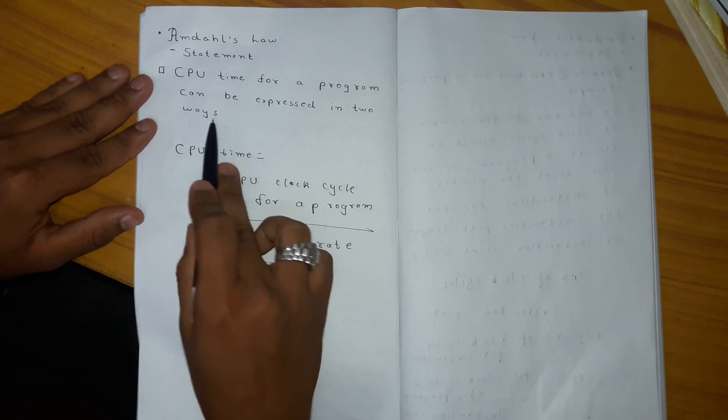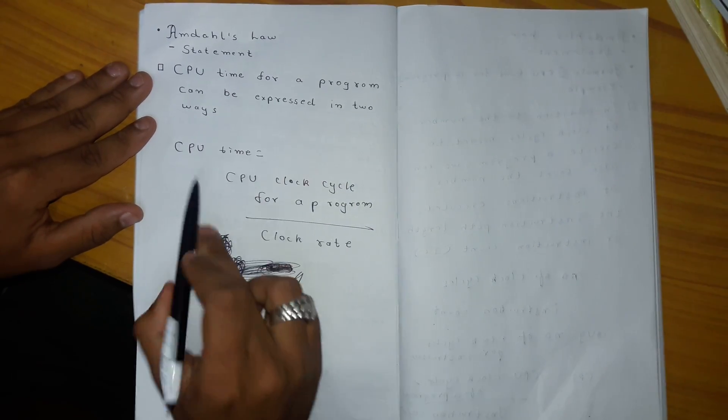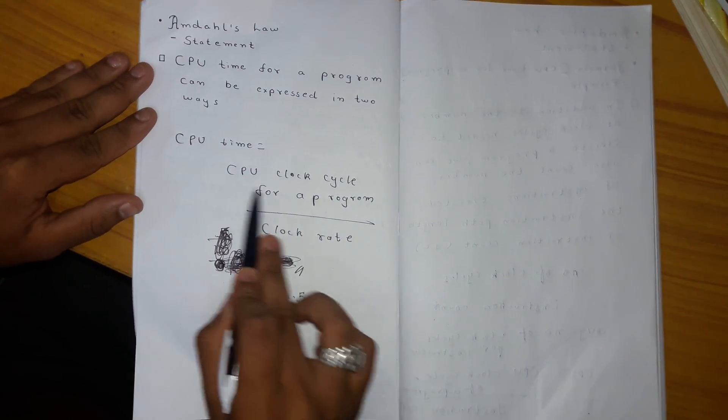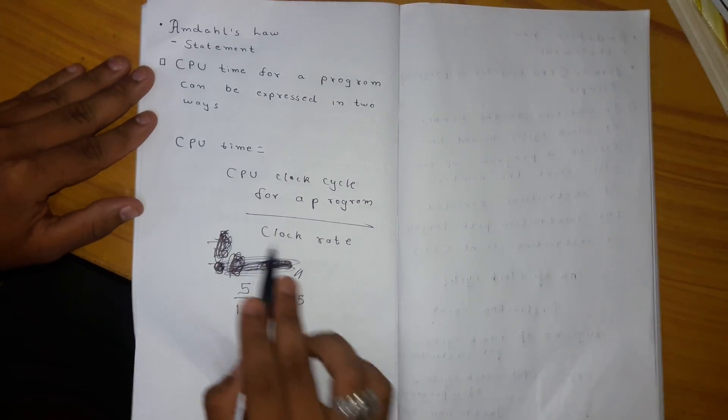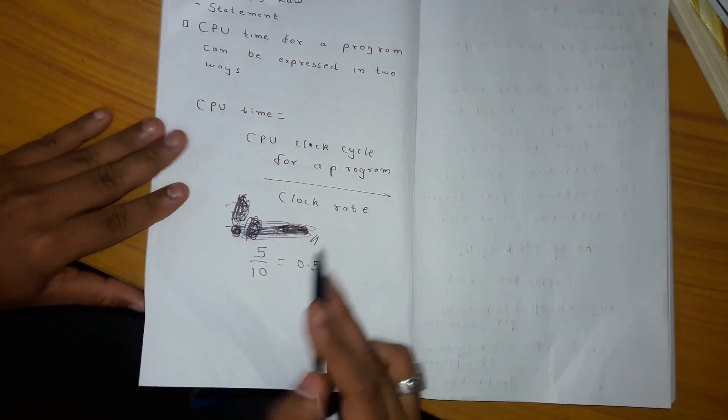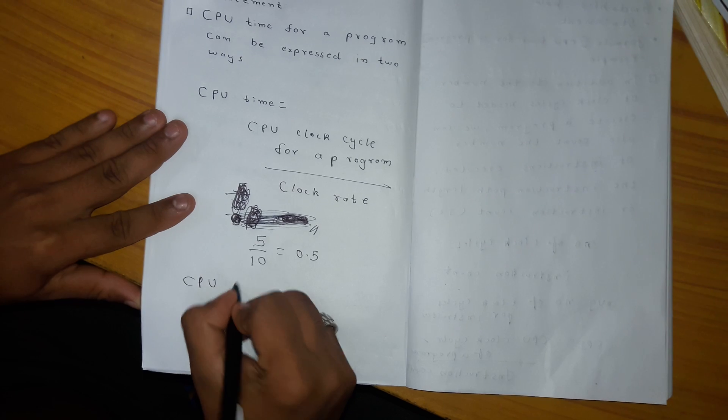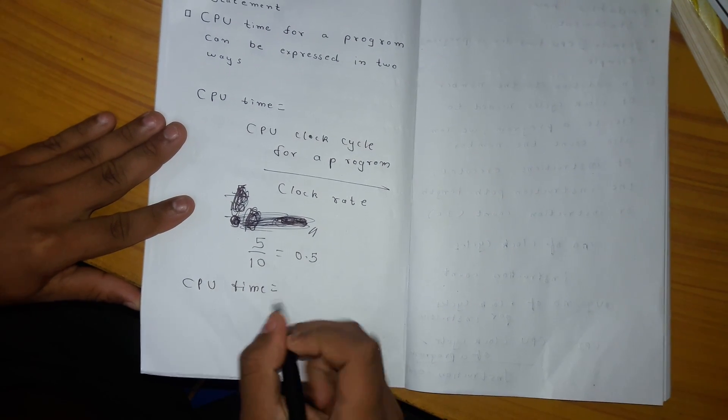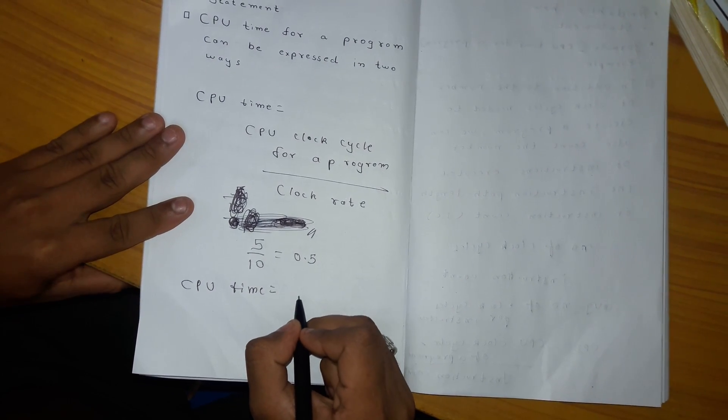CPU time for a program can be expressed in two ways. That is, CPU time equals CPU clock cycles for a program divided by clock rate, or CPU time equals CPU clock cycles for a program.